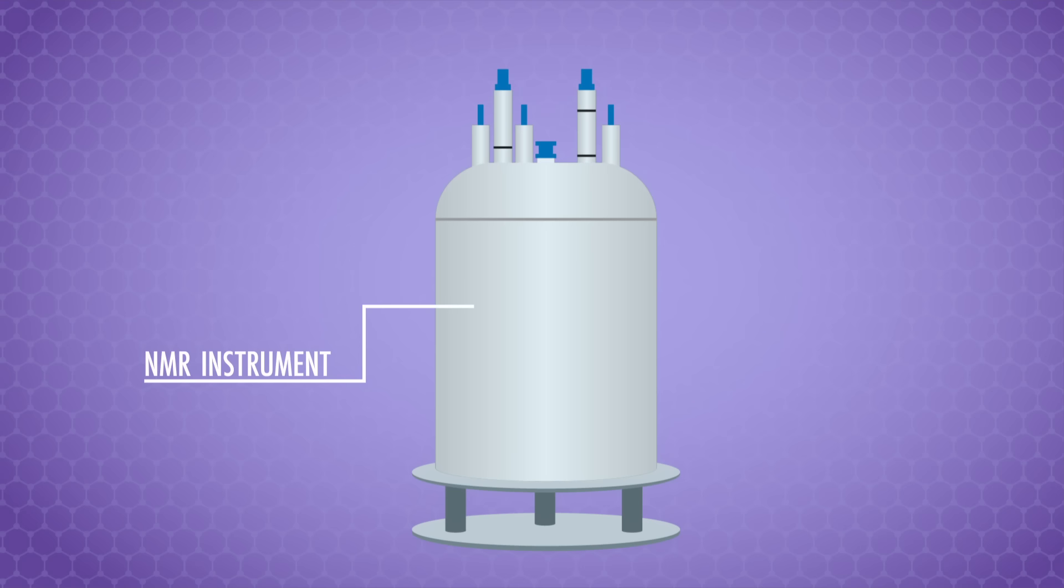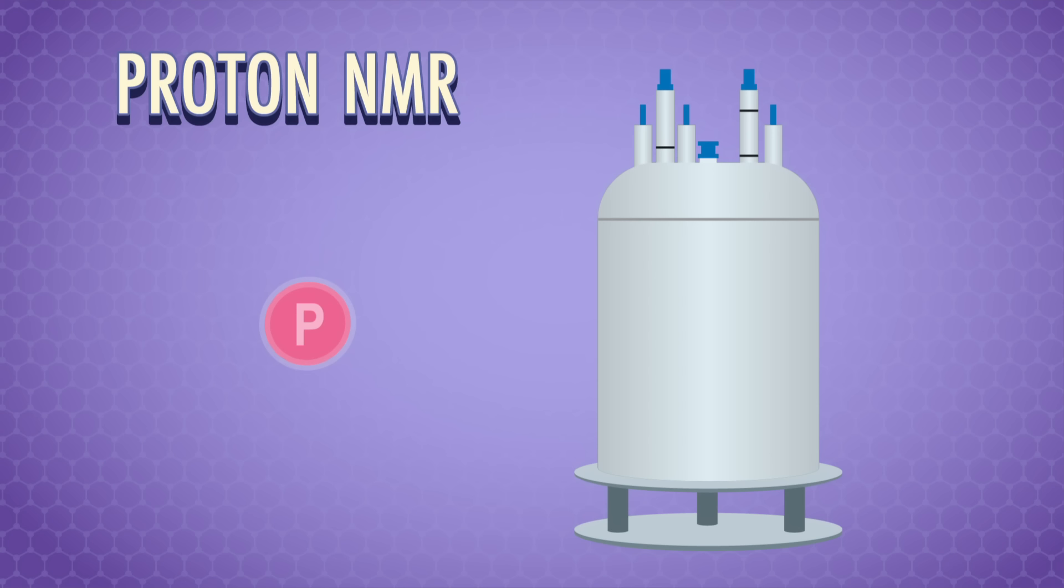In this episode, we're going to concentrate on proton NMR, which tells us about the hydrogen nuclei, and therefore hydrogen atoms in molecules. In general, we'll get a huge magnet, and dissolve our chemical sample in a special deuterated solvent, where the hydrogen atoms are replaced by deuterium.